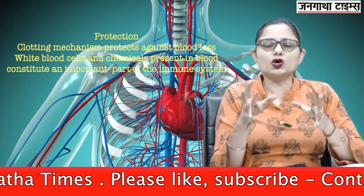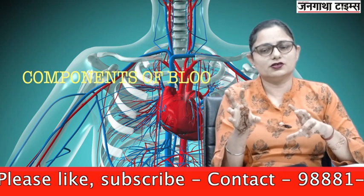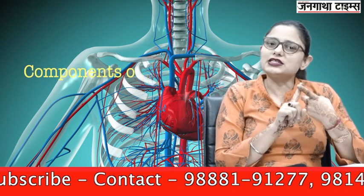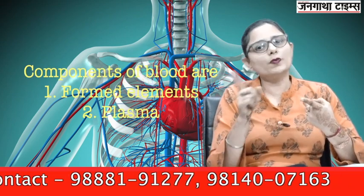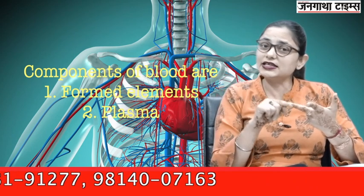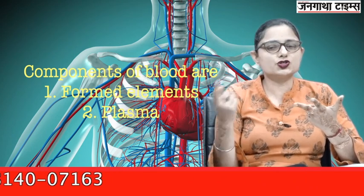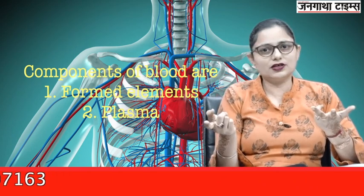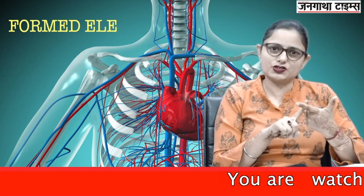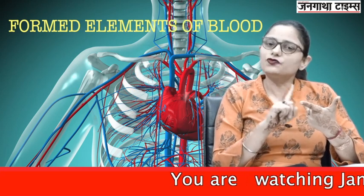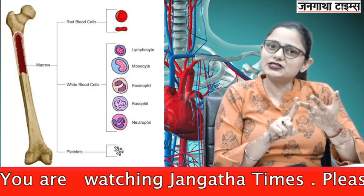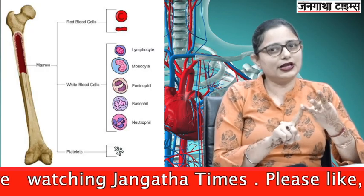Now we will talk about the components of blood. One is the cellular components, which are the formed elements of the blood. The second is the fluid matrix, which is called plasma. The formed elements are red blood cells, white blood cells, and platelets.